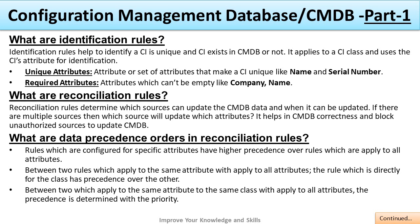What are the reconciliation rules? Reconciliation rules determine which sources can update the CMDB data and when it can be updated. If there are multiple sources, the rules determine which source will update which attribute. They help in CMDB correctness and block unauthorized sources from updating the CMDB. This is another type of rule configured in the backend.